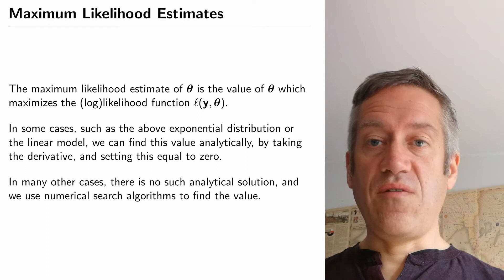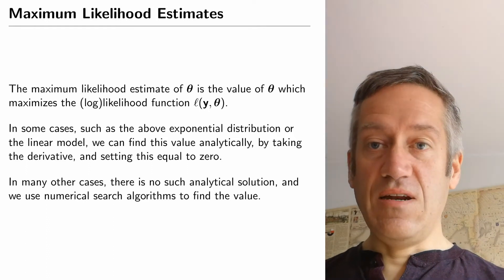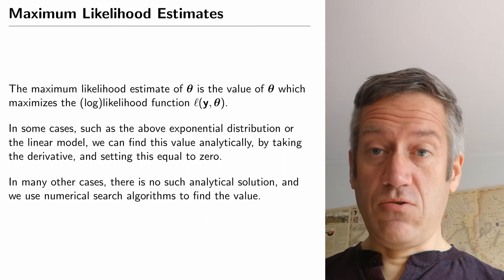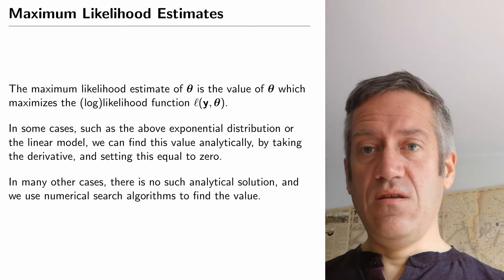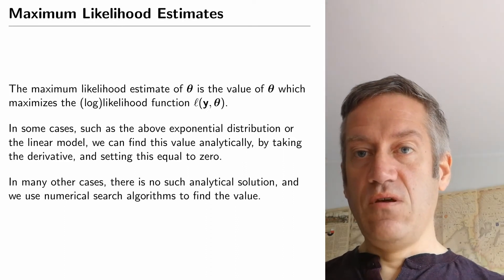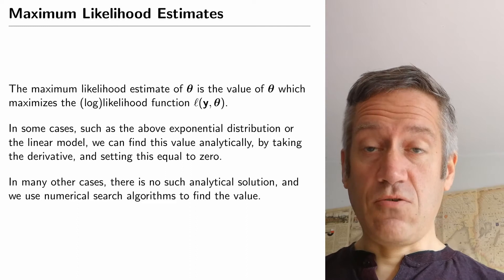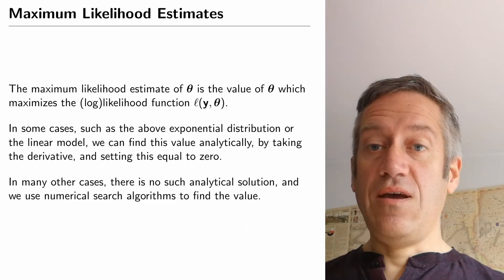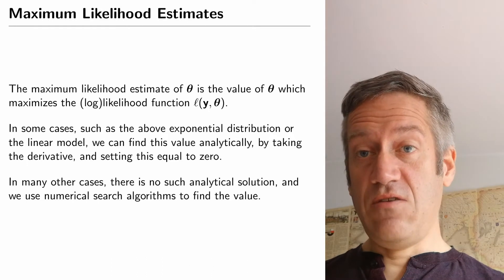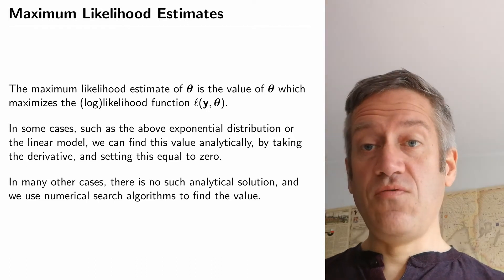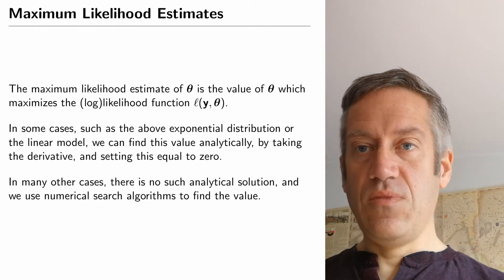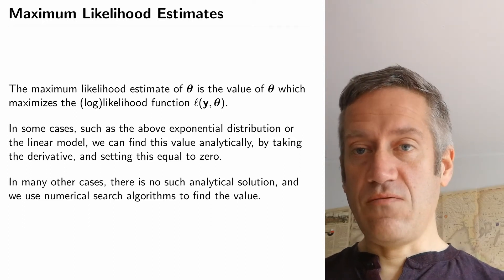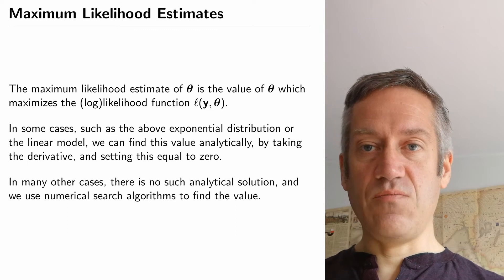In many cases, however, where we use maximum likelihood, this analytical solution is not available. Then we use numerical optimization to find the right value. We have a search algorithm in a computer where we try many different values of the parameters and each time we calculate the likelihood function. We preserve the one where we found the highest value. So we search for the highest point as opposed to finding the derivative and calculating the highest point.